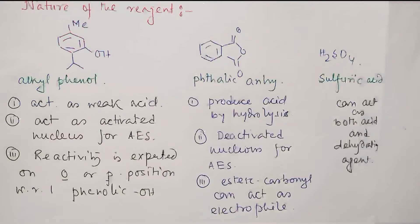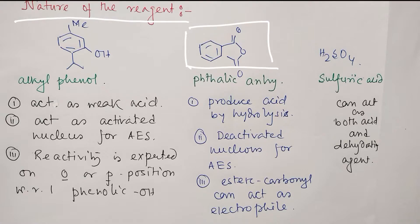Let's start. First we need to know the nature of the reagents, because it helps us understand and predict the possible reaction. Look at phthalic anhydride — it is an anhydride of phthalic acid. Since it's an anhydride, what can we expect? Anhydrides are not very active unless hydrolysis occurs, but this one is not very prone to hydrolysis because it is a 1,2-acid with benzene — this planarity helps it remain stable in the anhydride form.